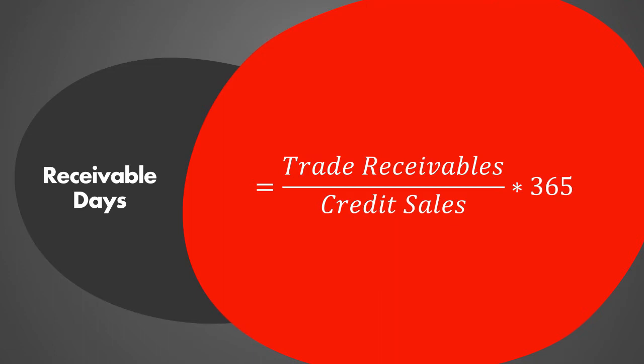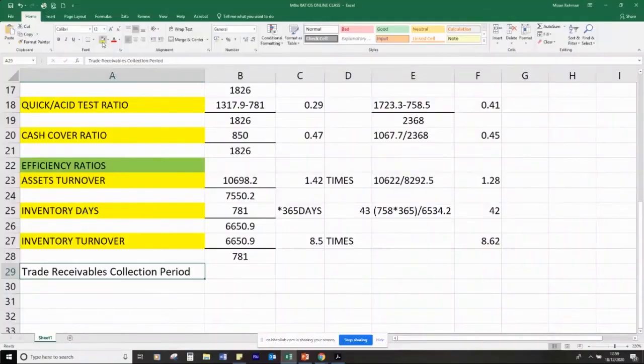There's actually a department in most medium to large organizations called the credit control department — the people responsible for managing this ratio. So let's calculate — although it's not really relevant for Marks and Spencer because it's a retailer, I will calculate the ratio anyway to show you how to do it, and then it will be your job to actually do it for your own company. It is also called debtors days.